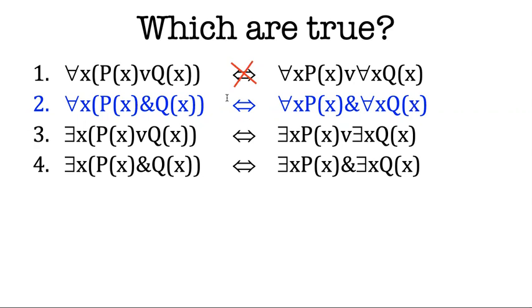And the entailment holds in the other direction too. If everything has P and everything has Q, then everything has P and Q. That makes perfect sense. So that one's good.